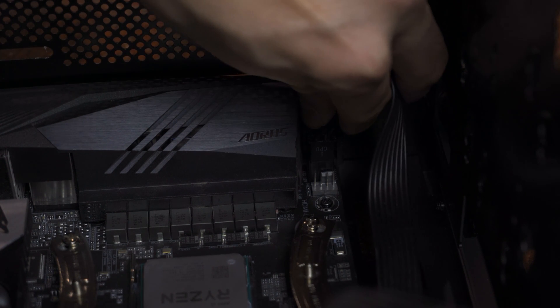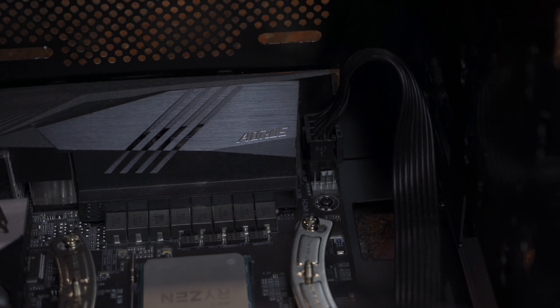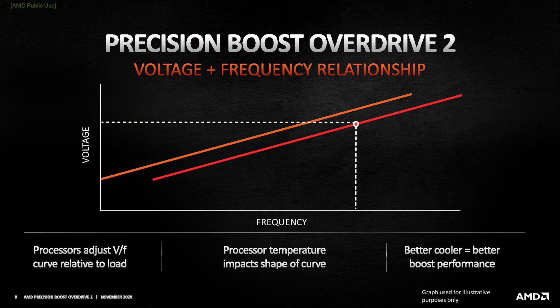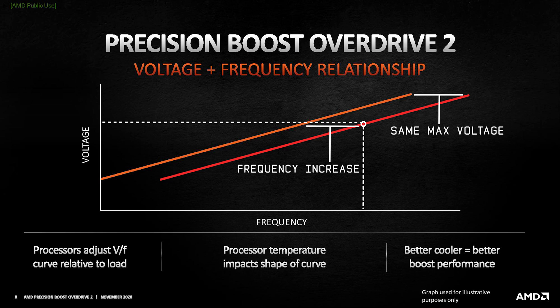The CPU can't actually change the voltage going into each core individually. The individual per-core offsets are not adjusting voltages per core — you're sliding the voltage-to-frequency curve per core to allow higher or lower clock speeds at the same voltage applied to the whole CPU. You're changing the multiplier, not the voltage.